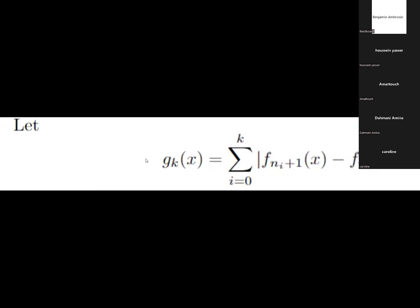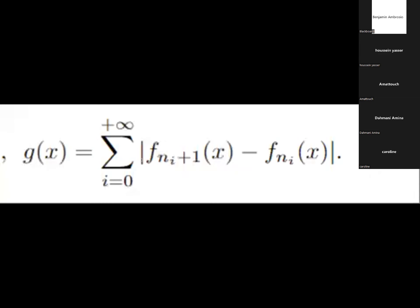So once you have your g of x, it means that you can take out the modulus and it means that this series here converges absolutely. And this implies, because this is a sum of f_{n_{i+1}} minus f_{n_i}, there's a typo, the plus one is in the i, so everything cancels but the last term.